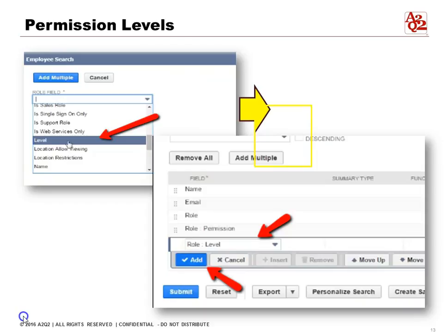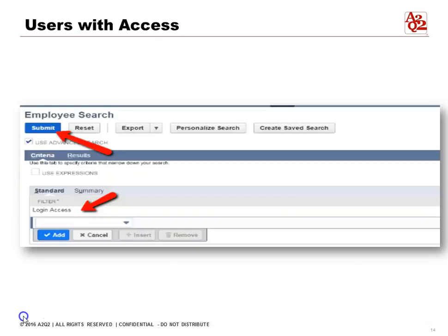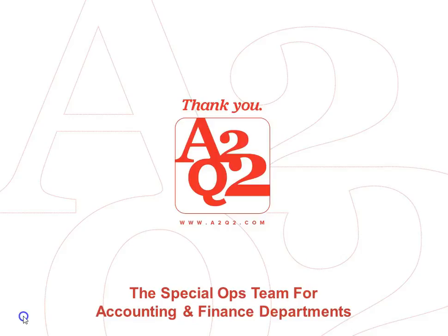Next, we want to see the level of permission users have, so go back to the Role fields and look for the field called Level, then hit Add. Our report will now show the employee's name, their email, their role, their role permission, and their role permission level. Under Criteria, we only want users who have login access to NetSuite — if they don't have login access, we don't want them in the results. Click Submit to generate the report.